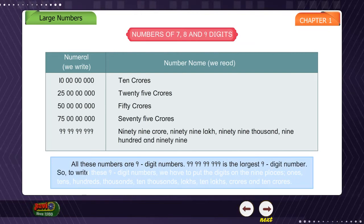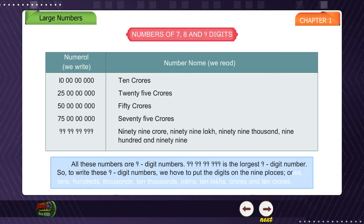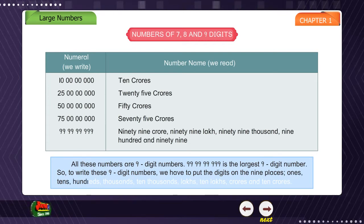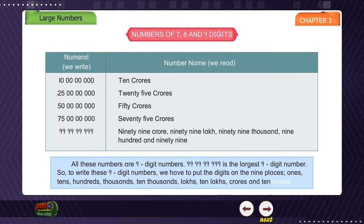So, to write these 9 digit numbers, we have to put the digits on the 9 places: 1, 10, 100, 1000, 10 thousand, lakhs, 10 lakhs, crores, and 10 crores.